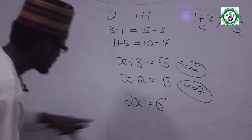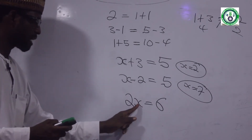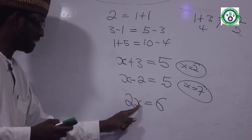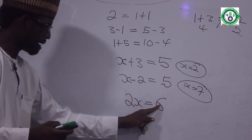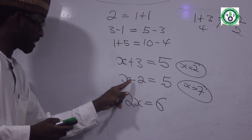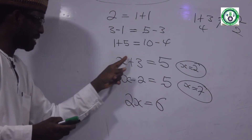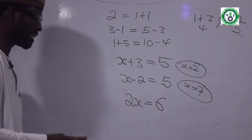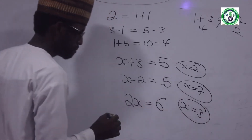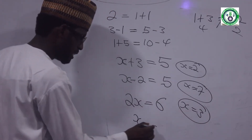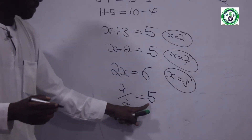That's what we're talking about — we're talking about x. X over 2 equal to 5. Da hausa: a certain number, if I divide it by 2, gives 5.